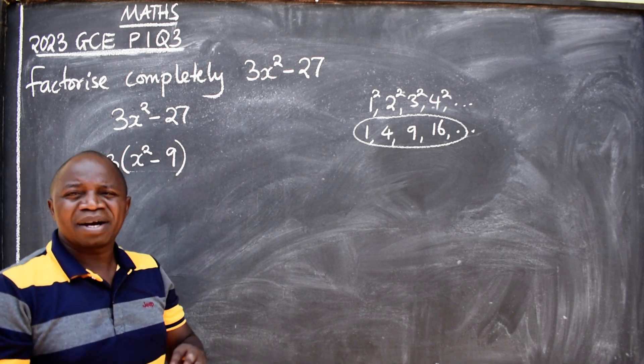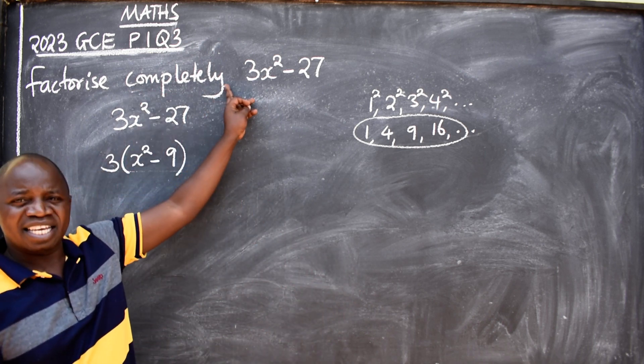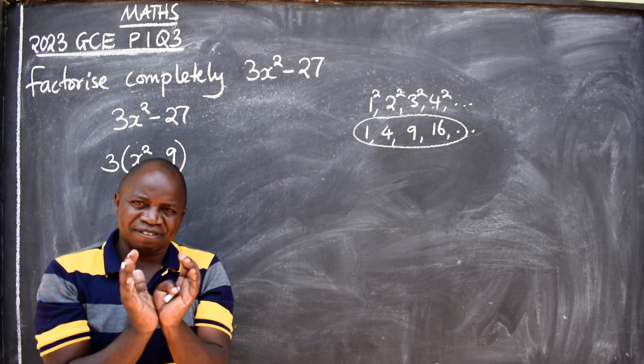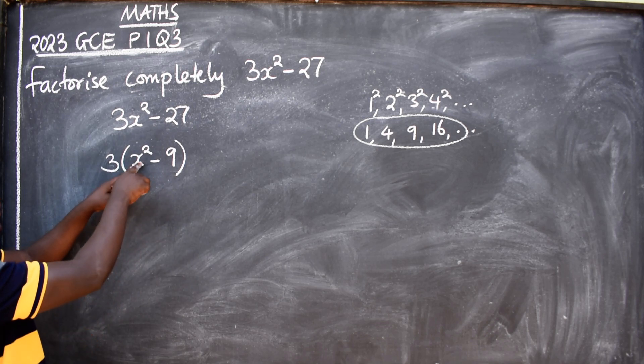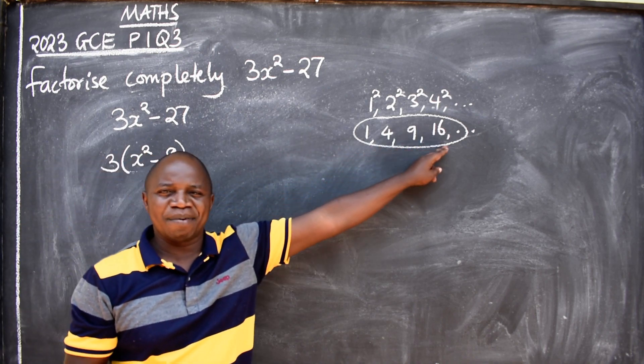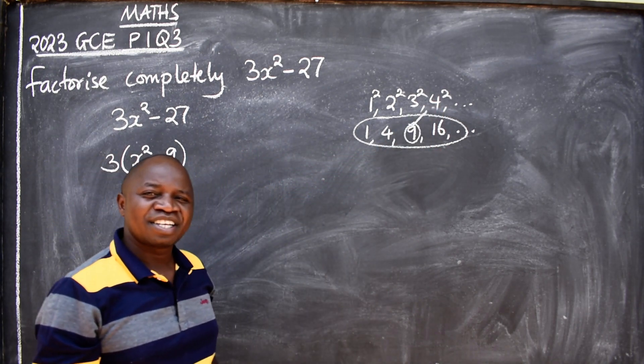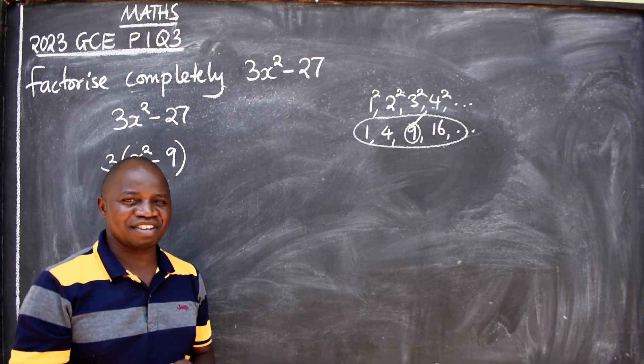At this point now focus on what is inside the brackets. Inside the brackets here we have x² already squared. Now look at 9 - is 9 a square number? Yes, it is here, it's a square number. See that. Then we are going to perform difference of two squares.